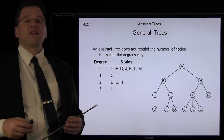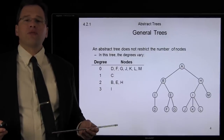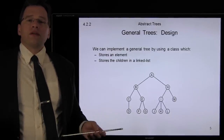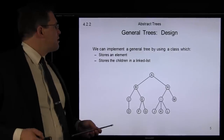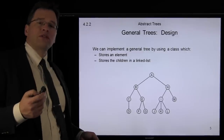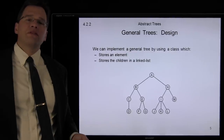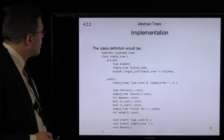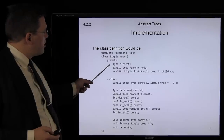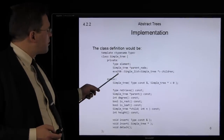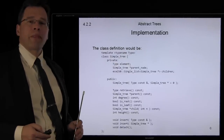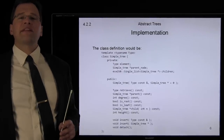Abstract trees do not restrict the number of children. For example, here we have a tree where nodes have 0, 1, 2, or 3 children. We can implement a general tree by using a node class where the class itself stores an element, and then all of the children of that element are stored in a linked list. We have a template type — it's a simple tree — and it stores an element, just like your singly linked list class. There's a pointer to its parent, and we're going to store a singly linked list of pointers to the children.